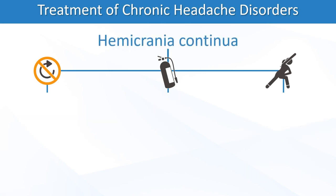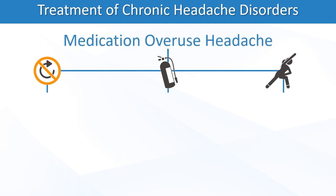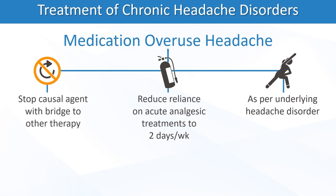Indomethacin is used for diagnosis, rescue, and prevention of hemicrania continua. Medication overuse headache can be prevented by treatment of the underlying headache disorder and by reducing reliance on acute analgesic treatments to a goal of no more than two days a week.